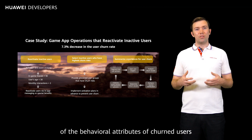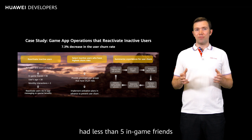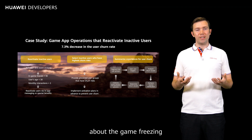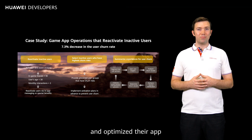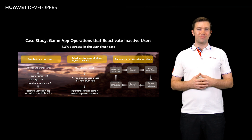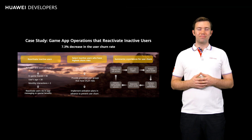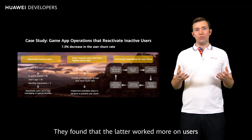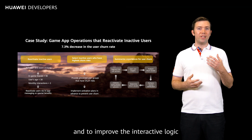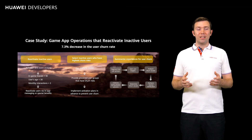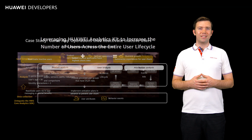The user lifecycle analysis model provided predicted user groups that demonstrated churn risks. Therefore, they were able to implement activation plans in advance and avoided user churn by improving the user experience and distributing benefits to users by email. After this, a detailed analysis of the behavioral attributes of churned users was carried out. It turned out that such users had fewer than five in-game friends and were most likely to have complained about the game freezing. The operations personnel tested and determined the causes of user churn, and optimized the app and operations accordingly. In-app improvements included providing a multi-channel account sign-in feature and a one-touch friend-adding feature. They found the latter worked better in comparison tests, so the final optimizations were to enable users to add friends and improve the interactive logic in the next game version. After optimization, the app successfully decreased the inactive user rate by 12% and the user churn rate by nearly 8%.